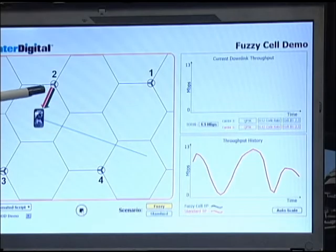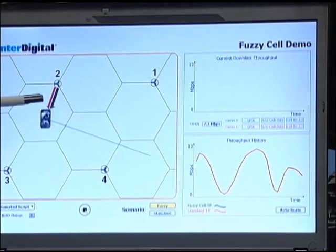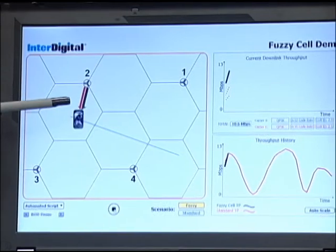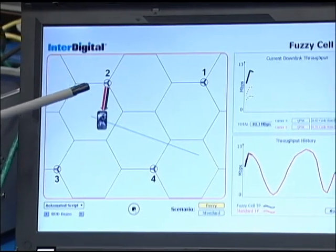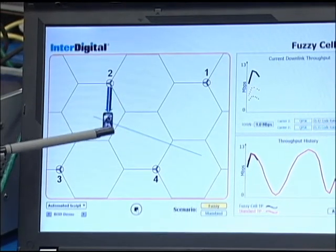For the fuzzy cells, what happens is that for each of the component carriers we have a different cell pattern. And because of the different cell pattern, we're never at the cell edge for all those component carriers at the same time.